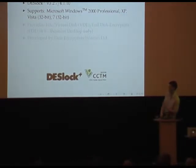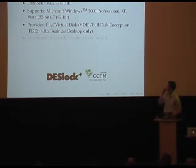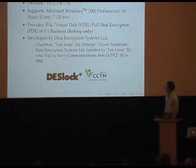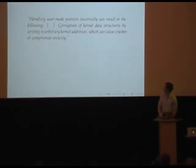This basically runs an effort in apartments before which you quite often see that. Provides file and virtual disk encryption. Also full disk encryption, but only if you buy the business version. Apparently only business users want full disk encryption. Developed by Data Encryption Systems Limited, the chairman Van Jones, director David Tomlinson, who we've spoken about. It was started by Van Jones who was ex-Navy Communications and GCHQ. One thing you should know about the British government is nepotism. They are extremely nepotistic. If you happen to work with GCHQ, you will come out there with a cryptographic product of some kind, and you will get government grants, and you probably will get government contracts.